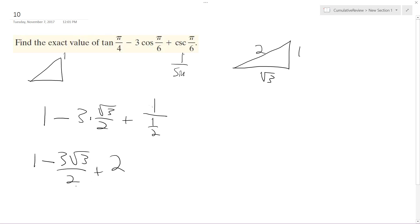So if we combine these, we get 2 over 2 minus 3 root 3 over 2 plus 4 over 2. So we end up with 6 minus 3 root 3 over 2.